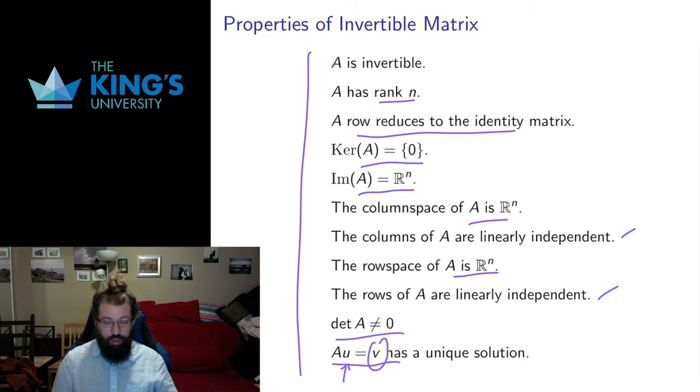Equivalently, if I put it into an extended matrix for a system with V as the column of constants, it will always row reduce to give me a unique solution. So AU equals V has a unique solution for fixed V. All of these things are equivalent. And this is really nice. This is a nice way to go back and forth between a bunch of properties that are defined all through the course, all relating back to whether or not a transformation, a matrix is invertible.